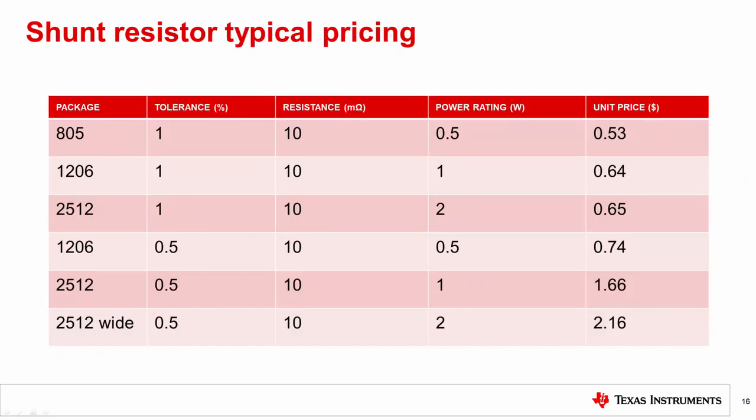Here is a table listing unit price for 10 milliohm resistors with different tolerance and power ratings. It can be noted that in general, price goes up with higher power and larger sized resistors. And choosing a higher precision resistor with low tolerance also demands higher price and larger board space.